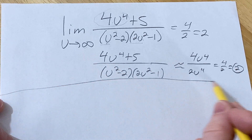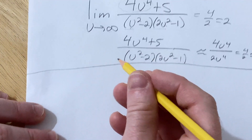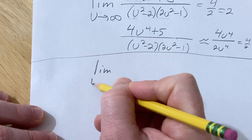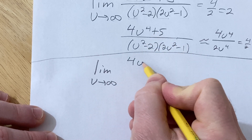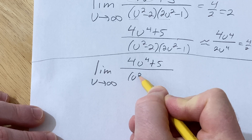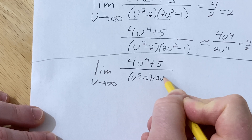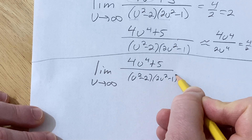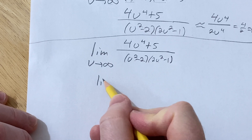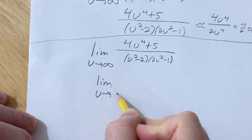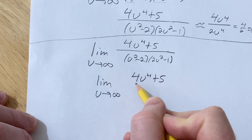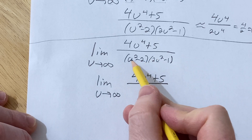However, if you're doing this for a class — maybe college or high school — or you just want to show more work, let me show you how to do that. So u is approaching infinity, and you have 4u to the 4th plus 5 over (u squared minus 2)(2u squared minus 1). We'll start by multiplying out the denominator.